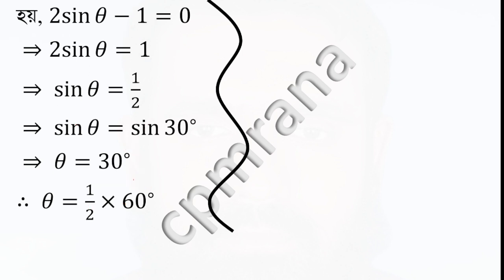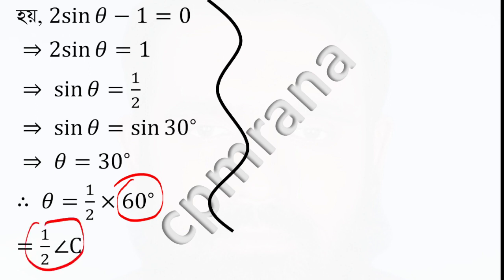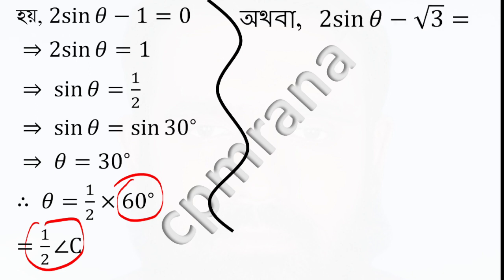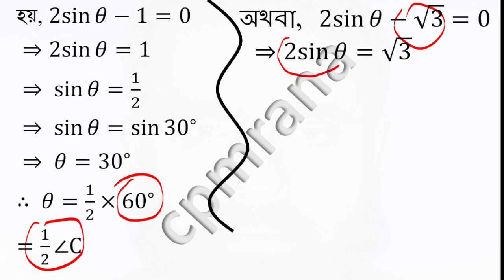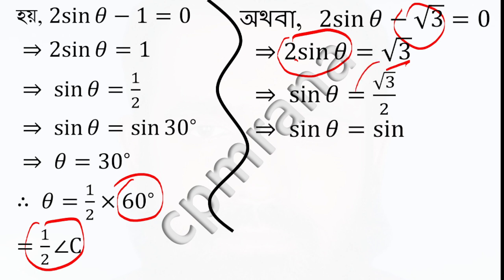So we write 2 sin theta equals 0, and from the second factor 2 sin theta minus root 3 equals 0. Now sin theta equals root 3 by 2, which is sin 60 degrees. So theta equals 60 degrees.